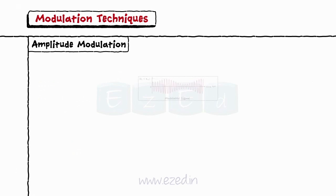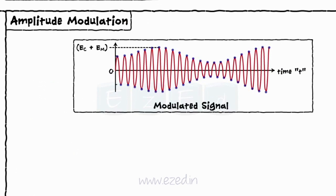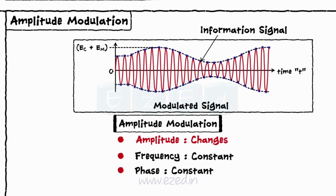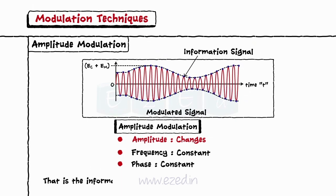If we concentrate on the third signal, then after joining every peak of the modulated signal, we get the information signal shown below by dotted lines. Thus, in amplitude modulation, the amplitude of the carrier changes and the frequency and the phase of the carrier signal remains constant. That is, the information is contained in the amplitude of the carrier signal.